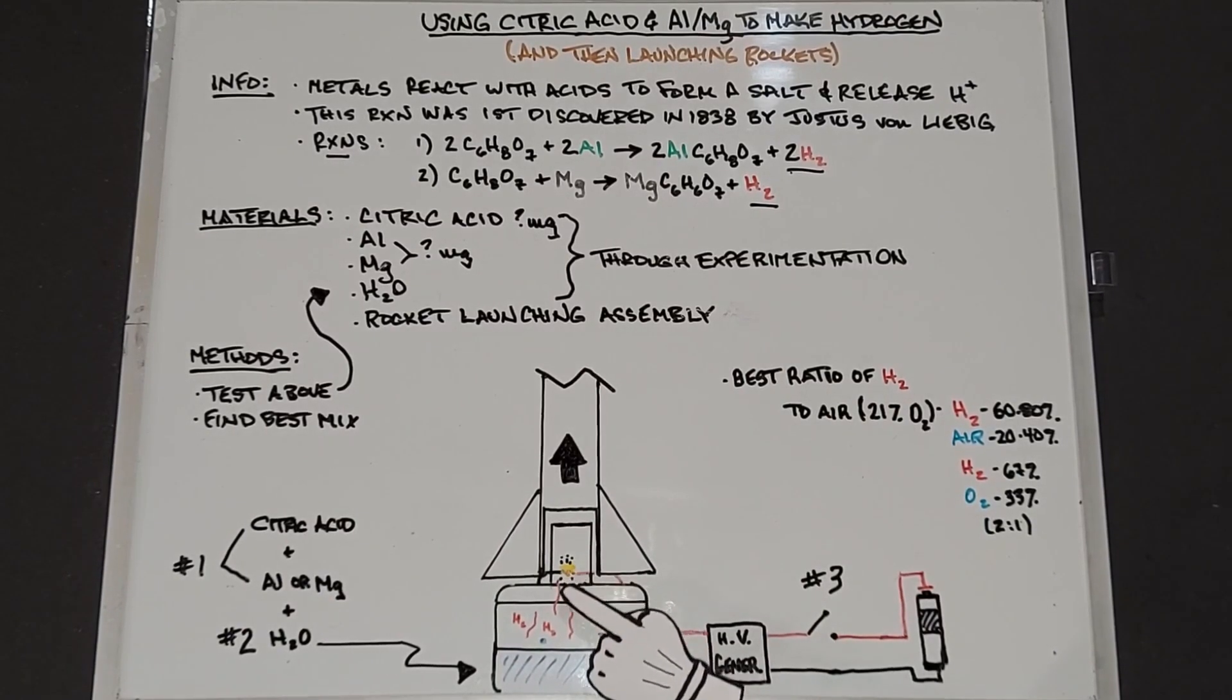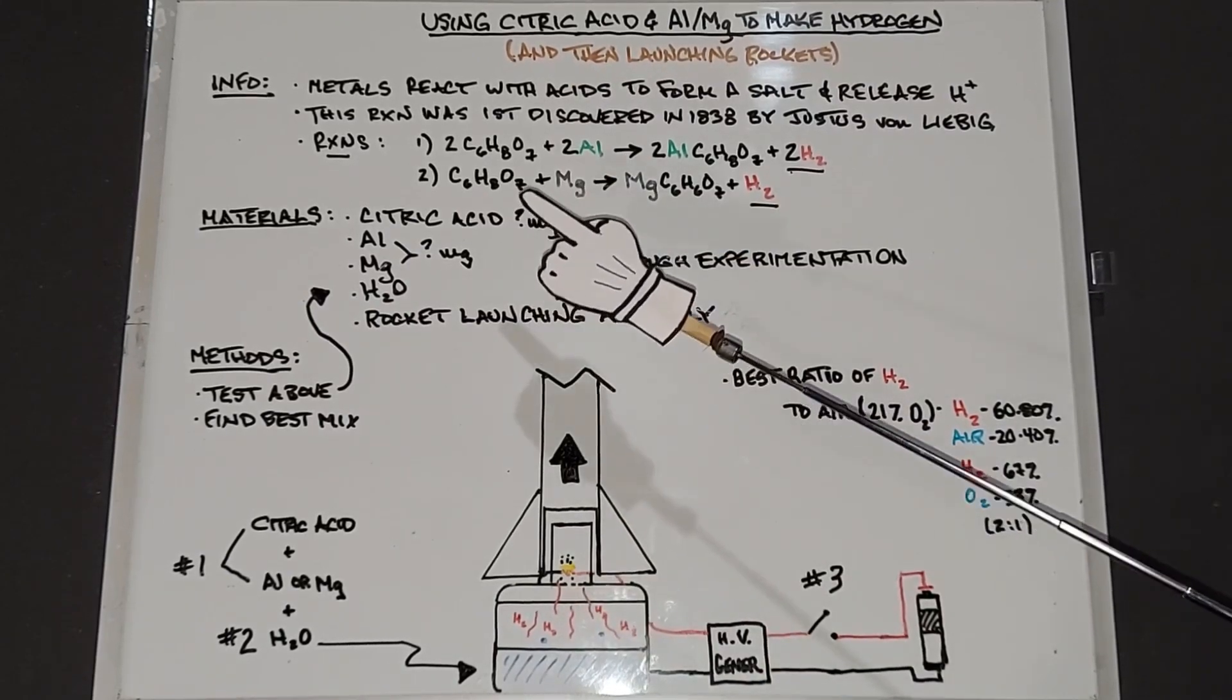Right here you'll see this little glitch, but that's a spark. I'll be using a battery with a high voltage generator, close the switch, cause a spark with the hydrogen, and hopefully we get our rocket to launch. I'm excited to do this project.